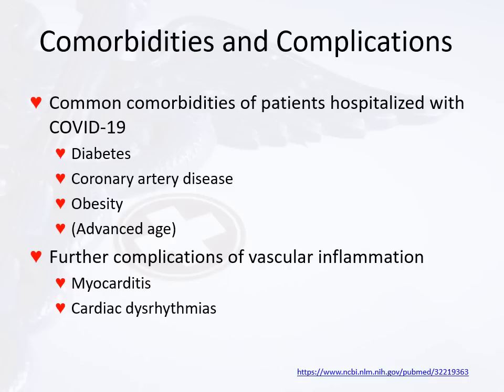Common comorbidities of patients with COVID-19 include diabetes, coronary artery disease, and obesity. Advanced age is not a comorbidity per se, but with advanced age you're more likely to see these conditions. There is also vascular inflammation with COVID-19 that can lead to myocarditis — inflammation of the heart tissue — and dysrhythmias. The primary focus, however, remains on ARDS.